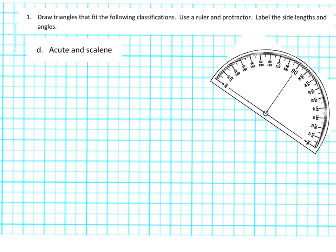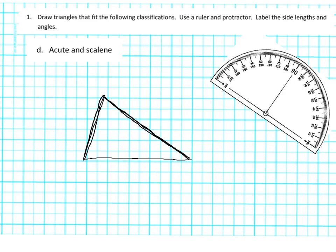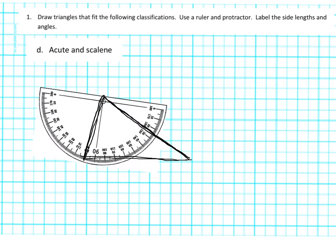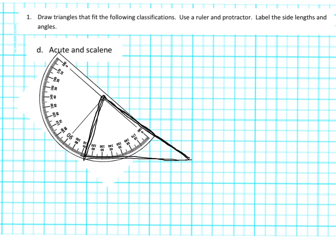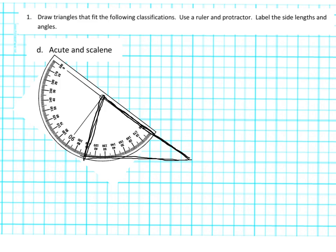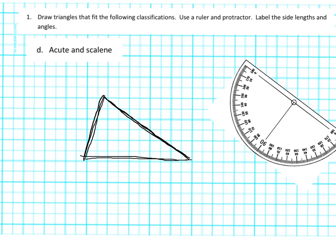Let's try again — acute and scalene. How about this? That's looking good. Let's see — that definitely looks acute, that definitely looks acute, and that looks acute too. But let's just check to be sure. I'm going to line up the target on the vertex and line up zero. I can see here's zero and there's 90 — so this is definitely an acute angle. So I've got three acute angles — I satisfied that part.